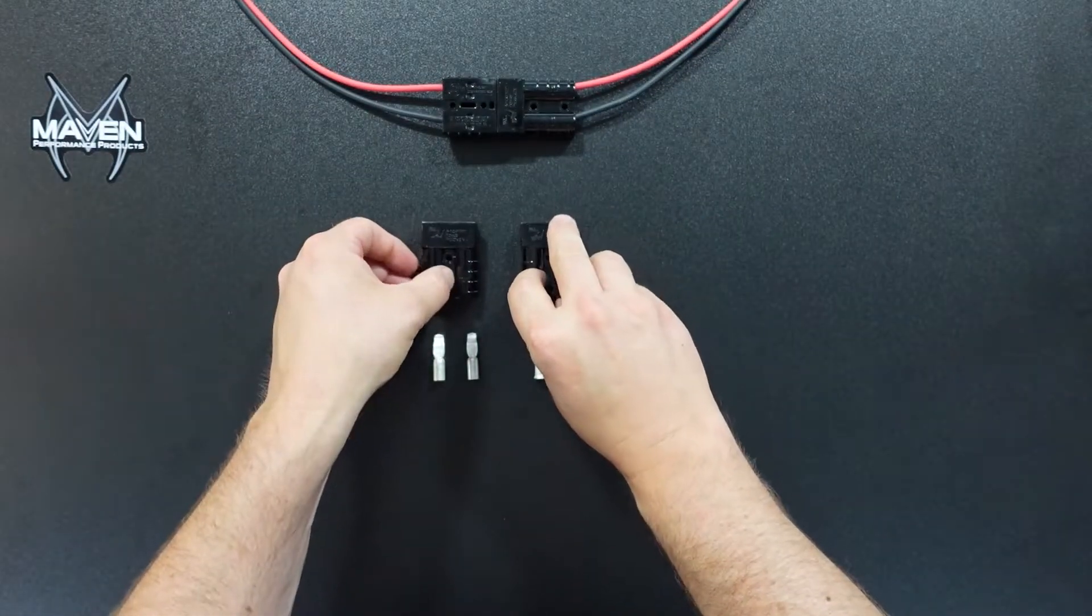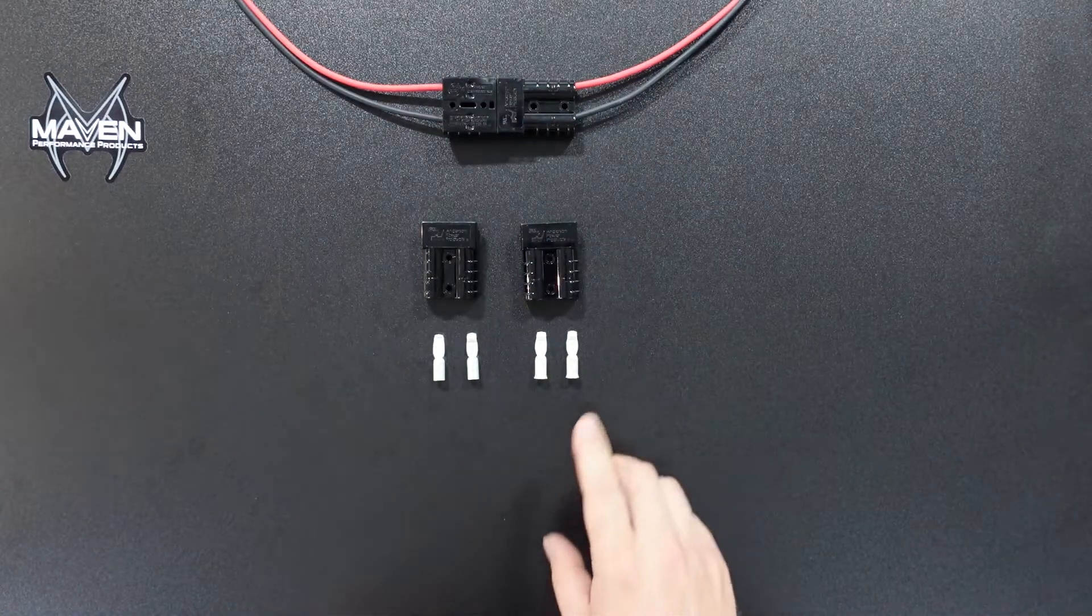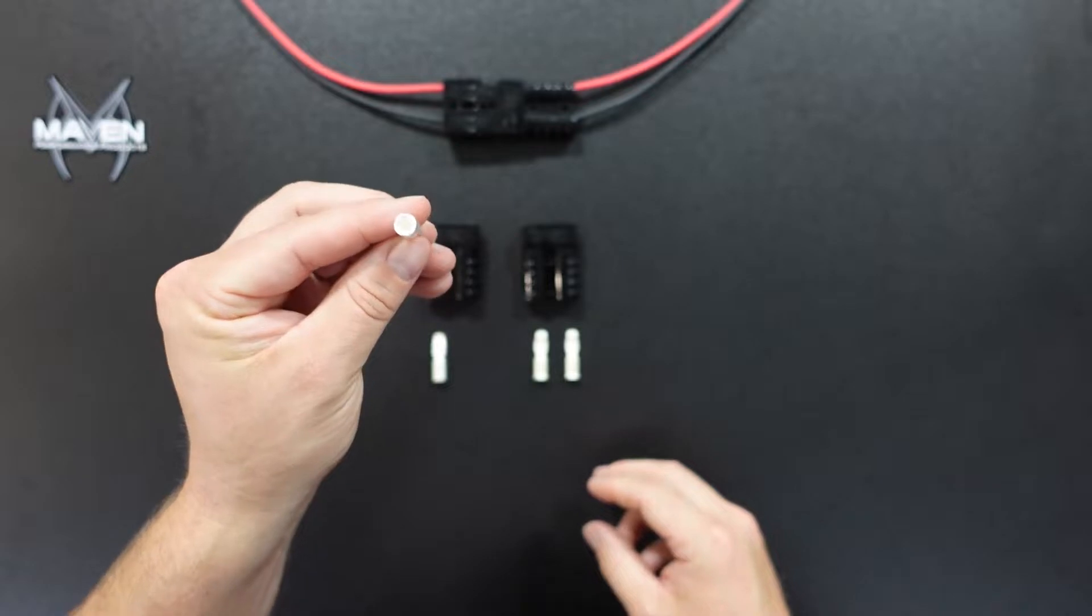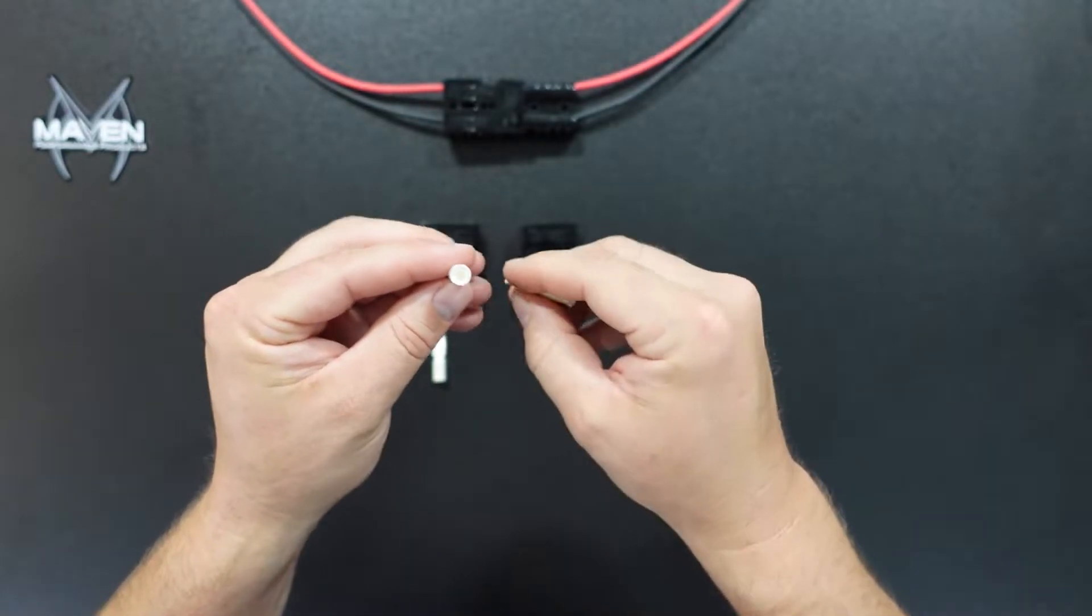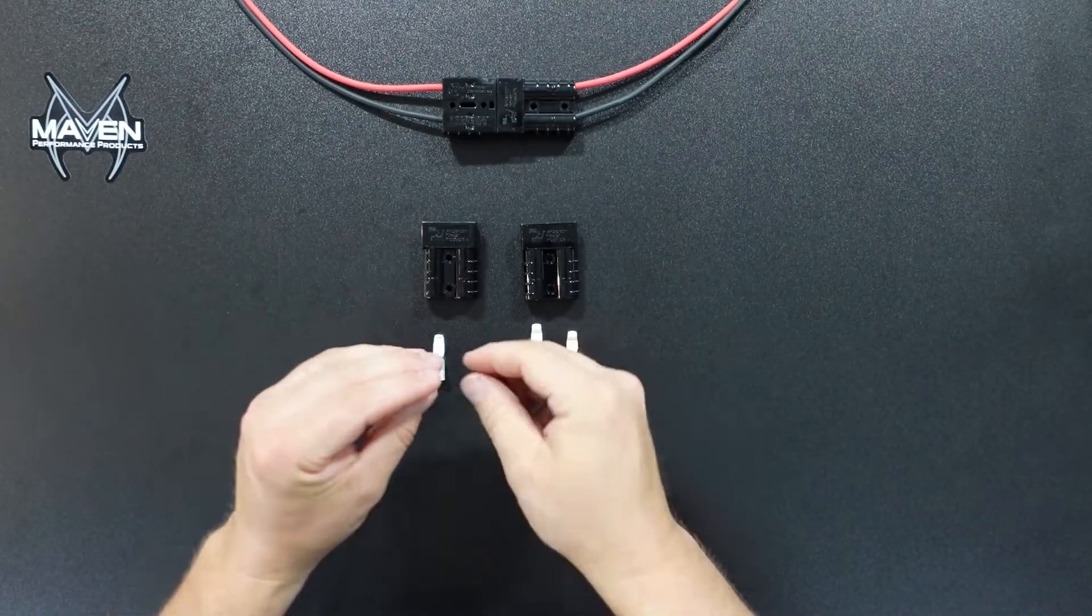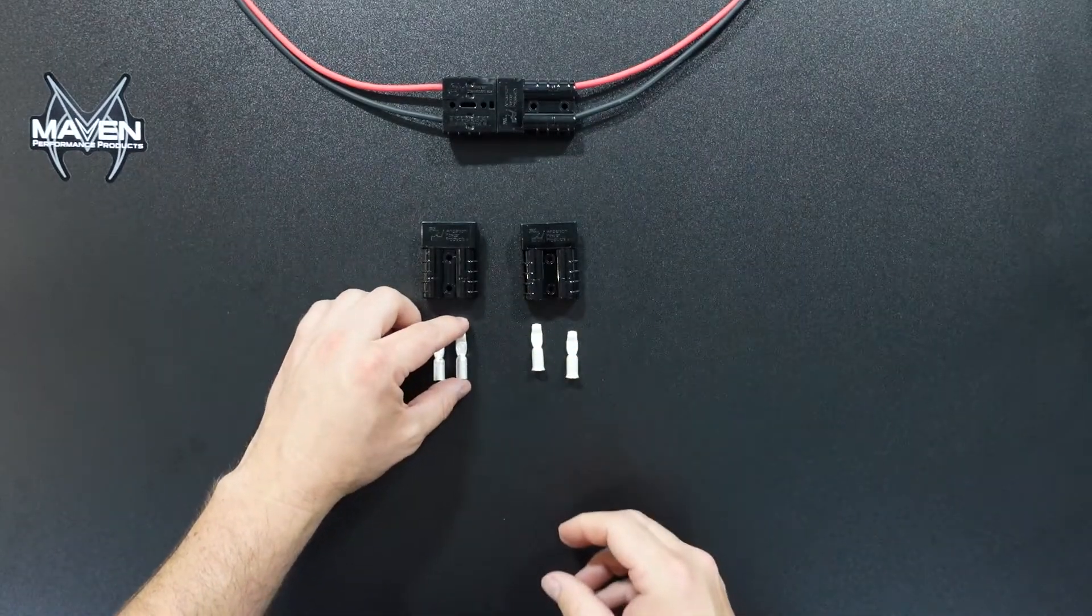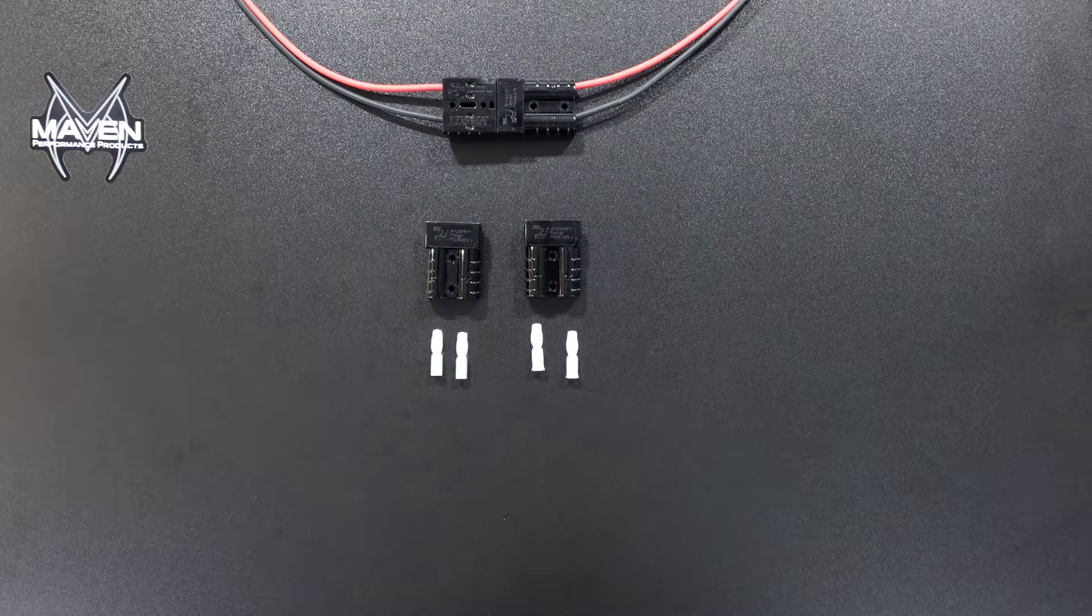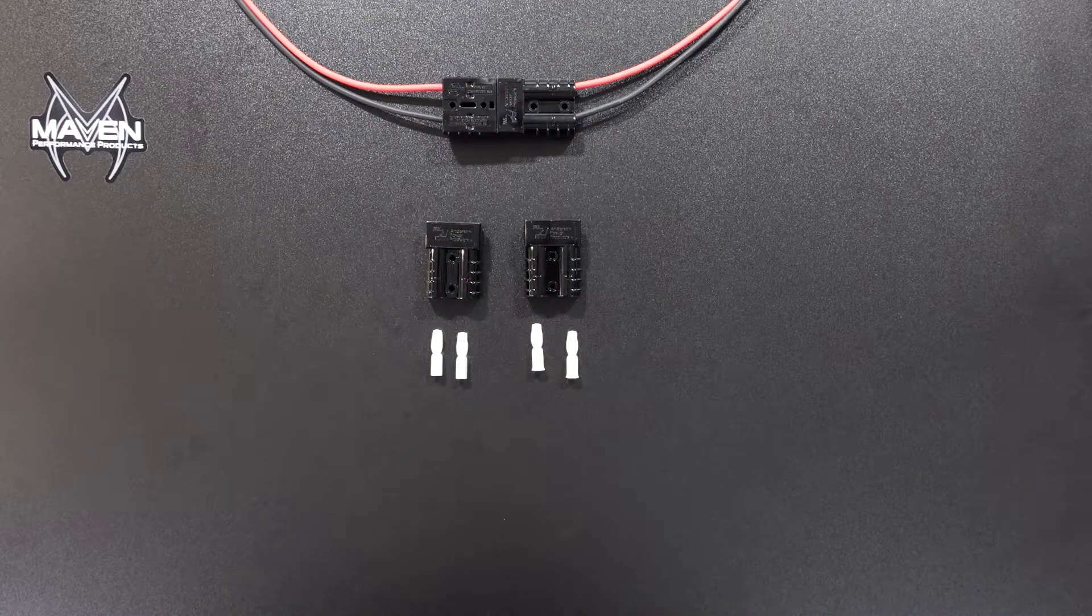This is an assembled one right here, and terminal options come for a 10 to 12 gauge size or for a 6 gauge size. So you have a few options there for power and ground cables to run into these. Definitely a useful tool, and we'll go through how to crimp and assemble the connector.